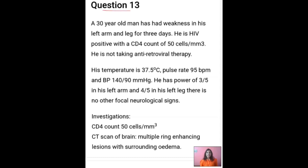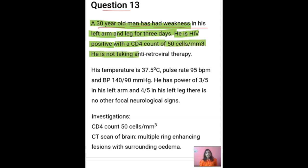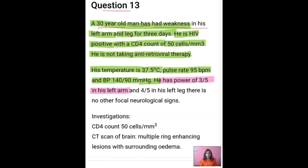Question number 13 says: a 30-year-old man has had weakness in his left arm and leg for three days. He is HIV positive with a CD4 count of 50 cells. He is not taking antiretroviral therapy. His temperature is 37.5 degrees Celsius, pulse rate is 95 BPM, and BP is 140/90. He has power of 3/5 in his left arm and 4/5 in his left leg. There is no other focal neurological signs.